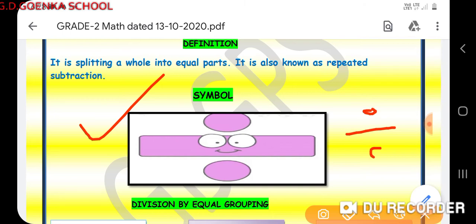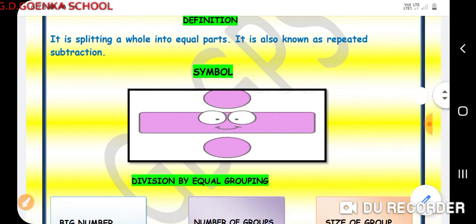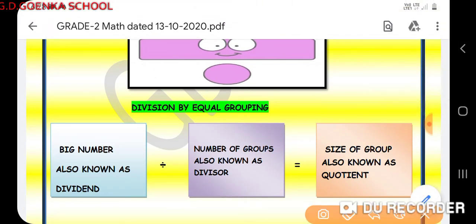And division by equal grouping: here the bigger number is known as the dividend, number of groups known as divisor, size of group also known as quotient.